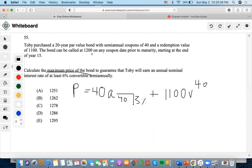It also says that it could be called by $1,200 on any coupon date prior to maturity, starting at the end of year 15. So there's going to be a second case involved.